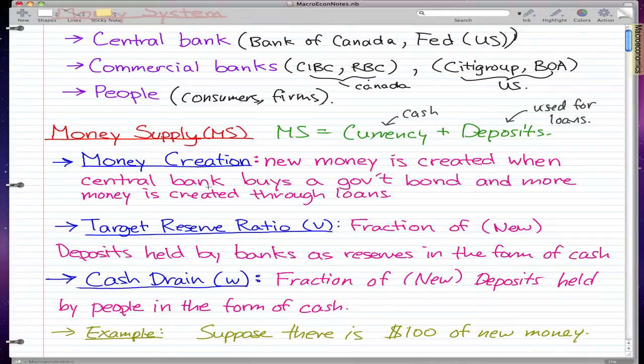That pretty much sums up money creation: making new money. That's what the central bank does—they can make money by buying government bonds, or they can make money through loans. They pretty much, I think, have the right to create money, to like print all paper money.